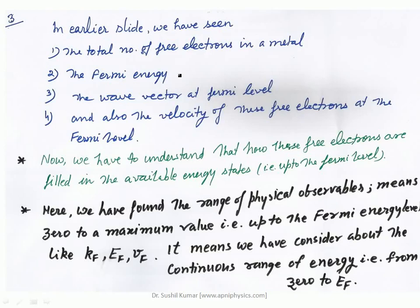All these things we have determined in K-space by assuming a sphere of Kf radius. At the Fermi energy level, the velocity, the momentum, and the total number of electrons and total number of states — we have determined these already.